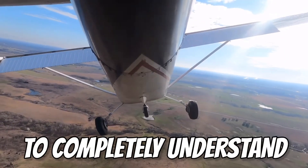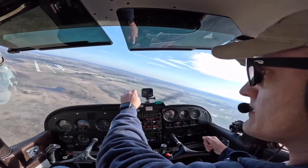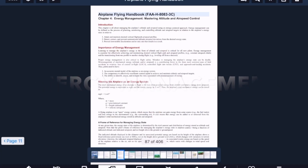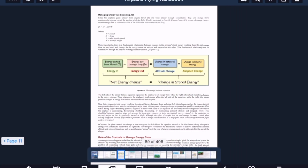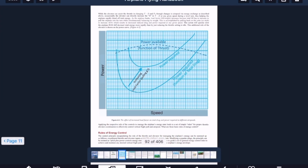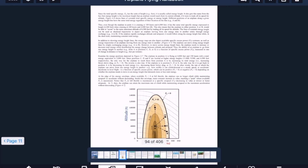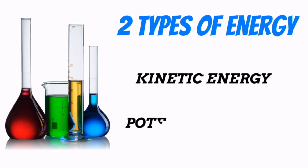In order to completely understand how to control the airplane you really need to have a basic understanding of energy management. If you're like me and you turn to the energy management chapter of the airplane flying handbook, you get even more confused by all the equations and charts in there. But it doesn't have to be that way — energy management is actually a pretty simple concept. As you may remember from high school science, there are basically two types of energy: kinetic energy and potential energy.